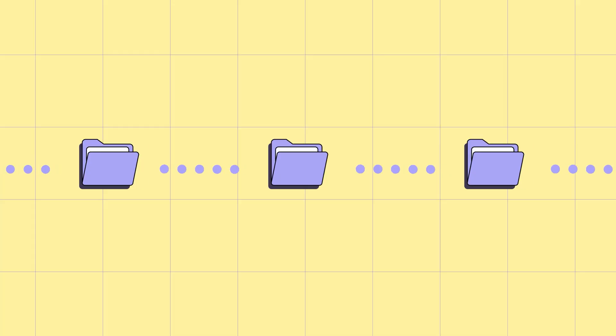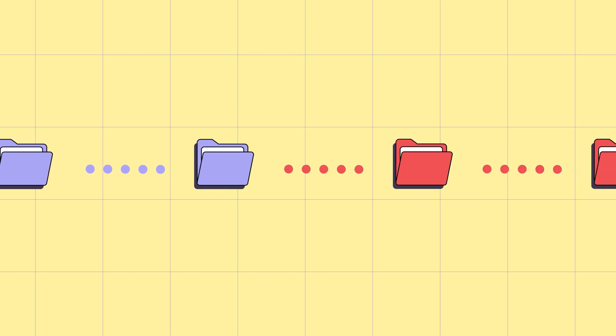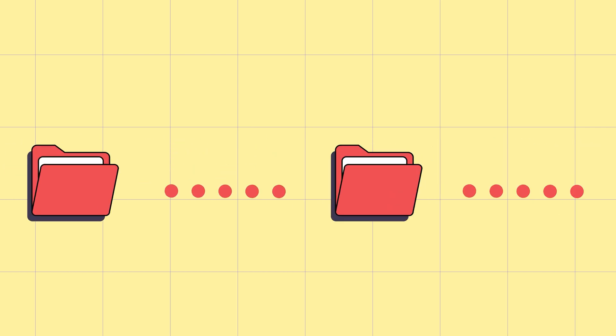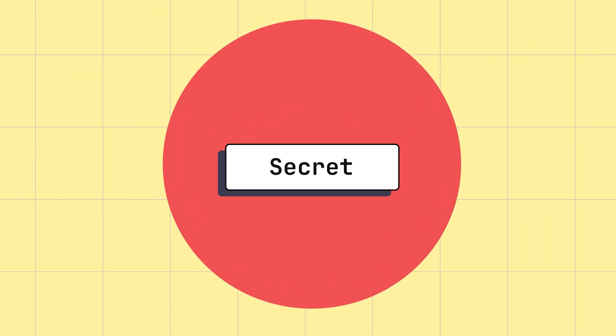Now we know what a secret is. Why is it such a big deal? When we look at all of the breaches that happen in the world, most of the time you can isolate the point where a security incident turned into a full-on security nightmare because someone found a secret. Trying to find secrets is typically the first thing an attacker is going to do. And these secrets actually live in a lot of places. So let's look at how they actually leak.